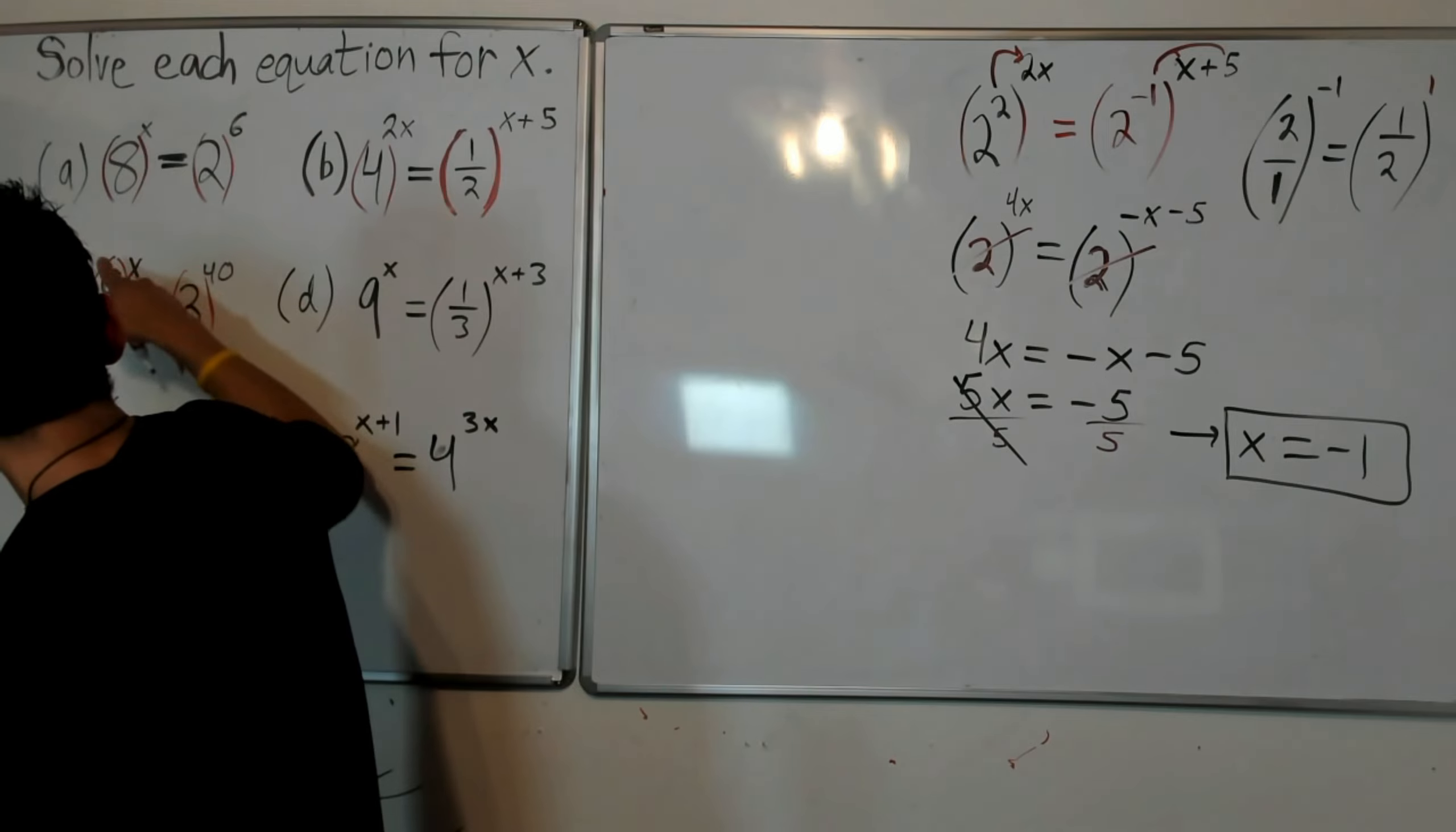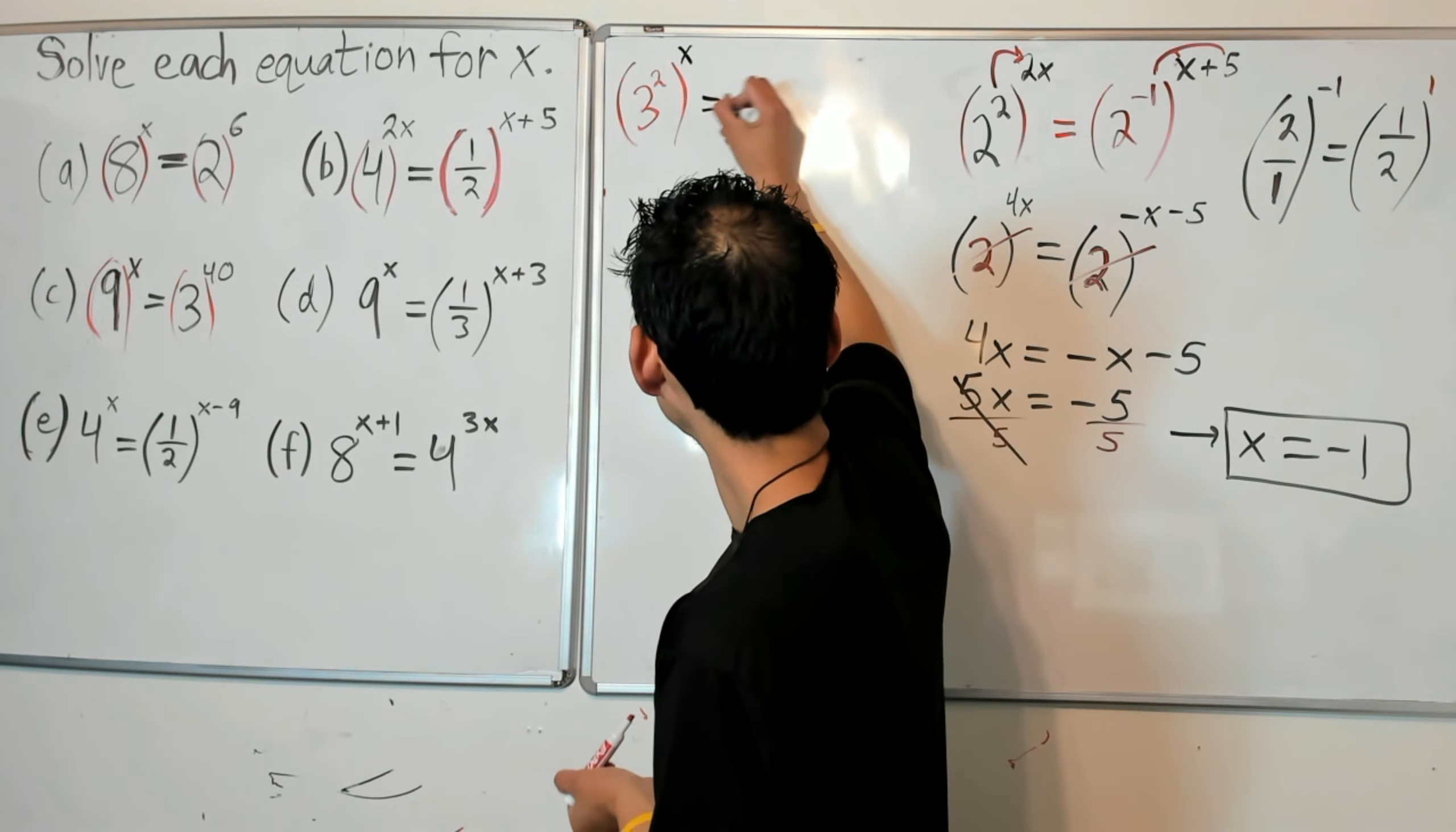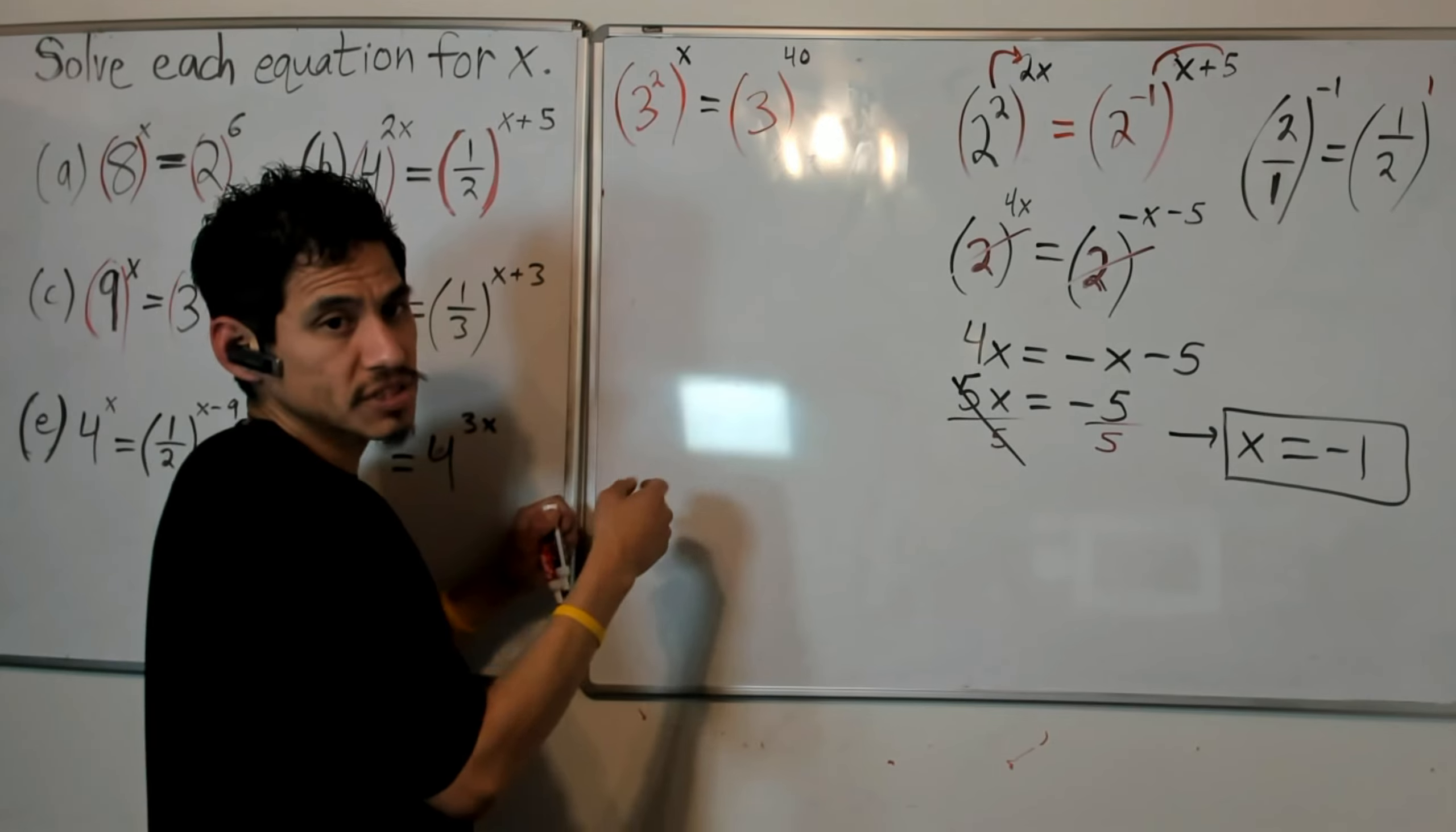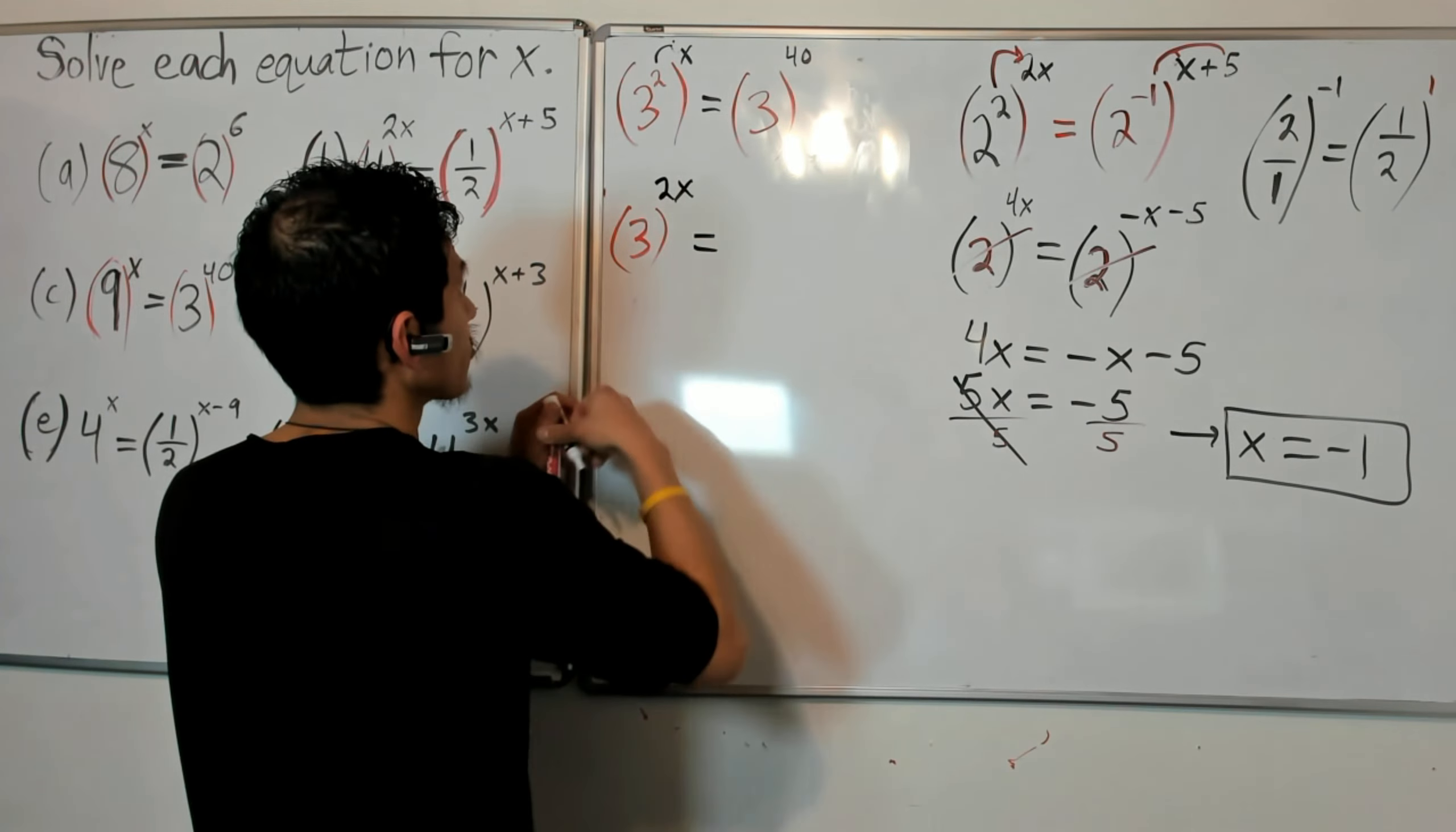Alright, so my bases here are 9 and 3. So I can write this 9 as 3 to the 2, or 3 squared. I have 3 to the 2 to the x on the left, and on the right I just have 3 to the 40. And then you can probably see what's going to happen here. I can distribute this 2 to the x on the left. 3 to the 2x equals 3 to the 40.